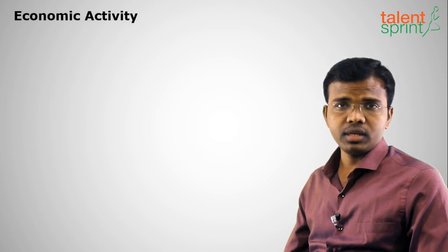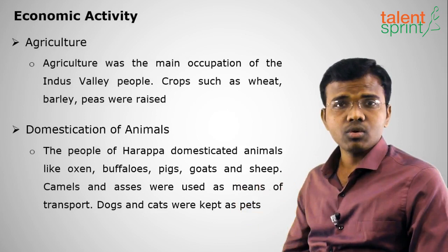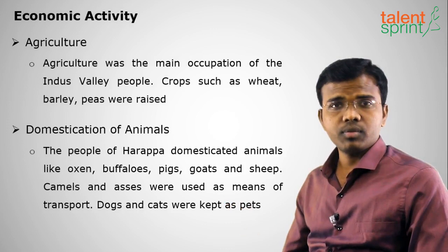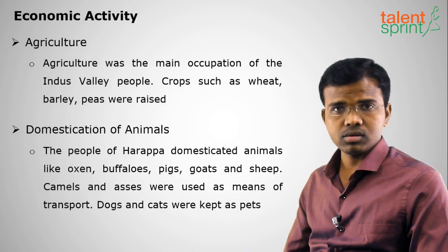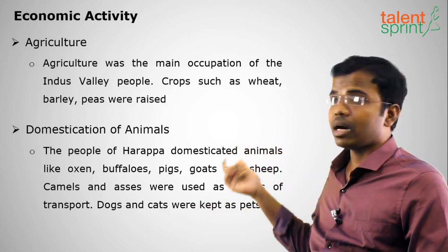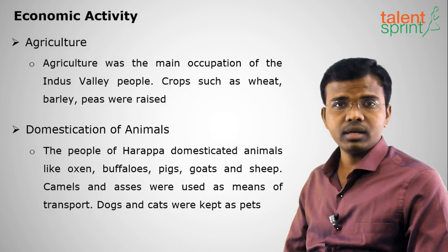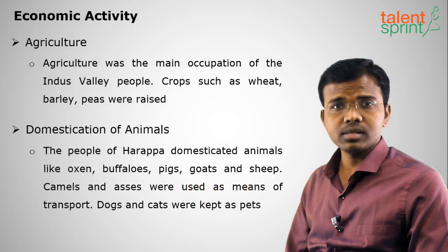Regarding agriculture, the Indus Valley people grew wheat, barley, and peas. Some places report that cotton was also grown, particularly at Mehrgarh in the Baluchistan province of Pakistan. Importantly, they did not cultivate rice — this is a key point to remember.